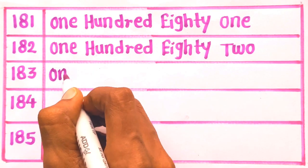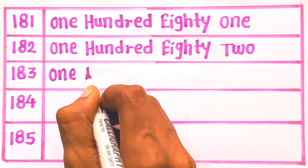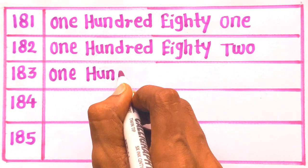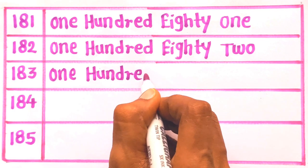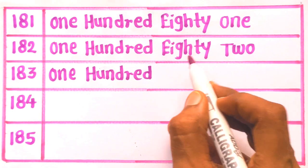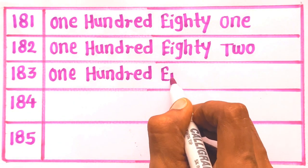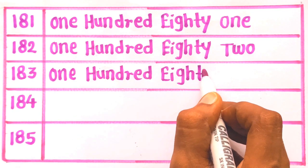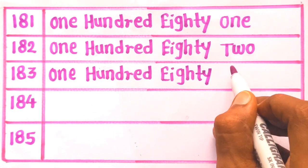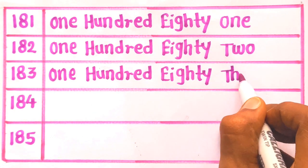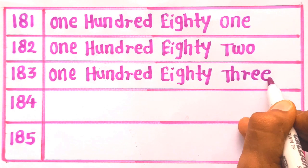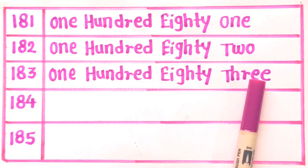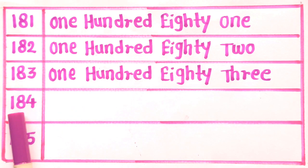Next is 183: O, N, E — 1. H, U, N, D, R, E, D — 100. E, I, G, H, T, Y — 80. T, H, R, E — three. One hundred eighty three. 183.